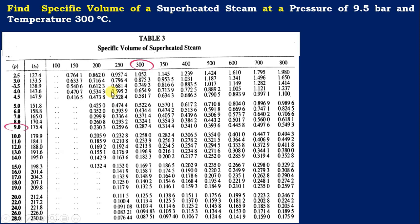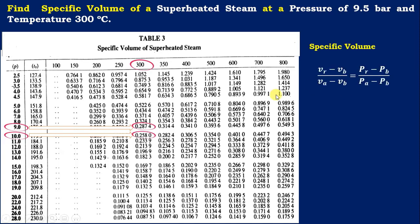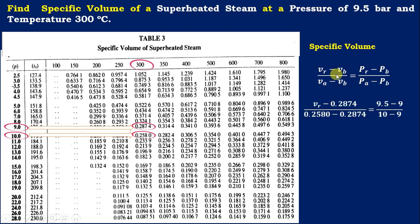To do interpolation, take the before and after values of the required pressure. For 9 bar pressure, the specific volume is 0.2874 m³/kg. Similarly, for 10 bar pressure, it is 0.2580 m³/kg. Using the interpolation formula — required minus before, divided by after minus before — applied to pressure versus specific volume, substituting gives the answer: 0.2727 m³/kg.